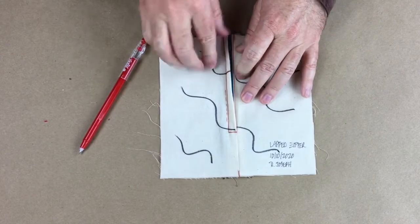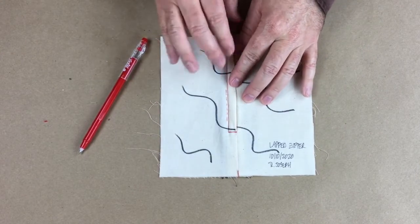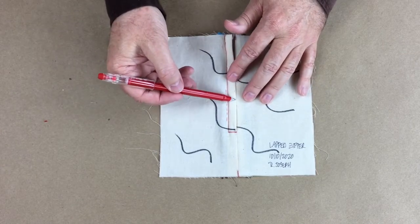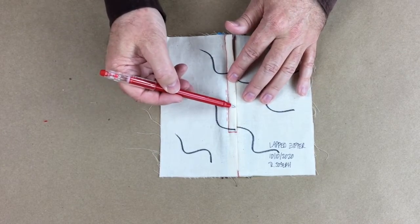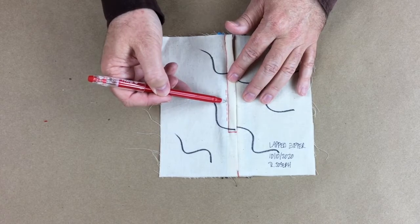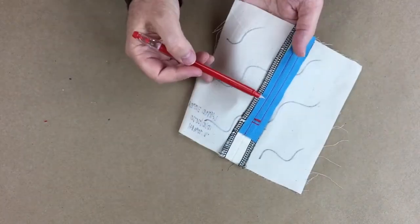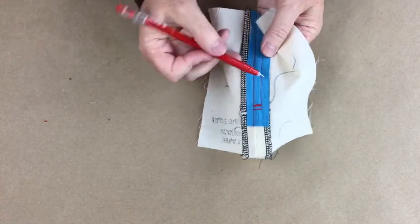That zipper is not going to go anywhere. You might see this on lighter weight fabrics, this narrow. Next time if you want to try a half inch seam, you will still definitely have enough space there to do your stitching.